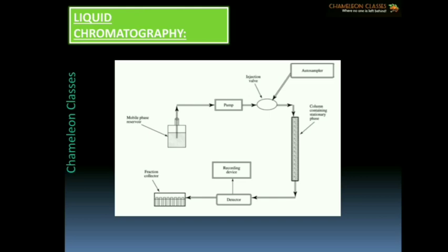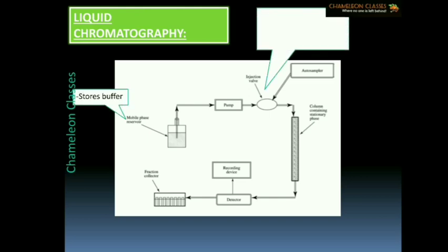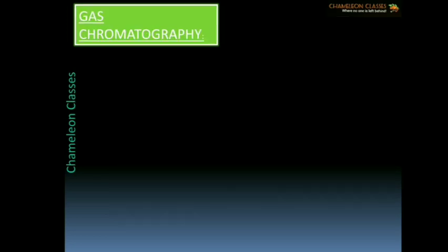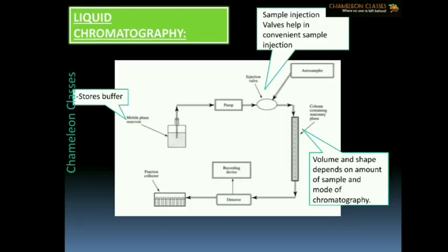It should be noted that sample preparation differs in different types of chromatography. In partition chromatography, the sample separates into individual components as it passes through the stationary phase. However, in absorption chromatography such as ion exchange chromatography, we load the entire sample and then fractionate the components later.